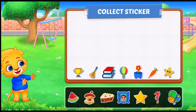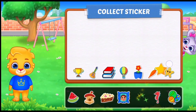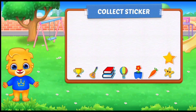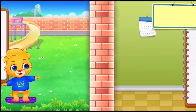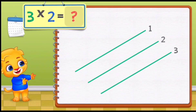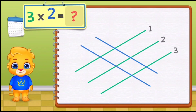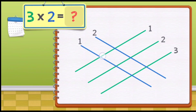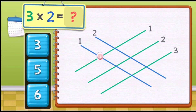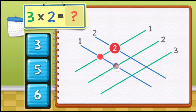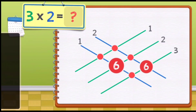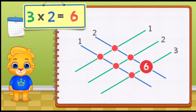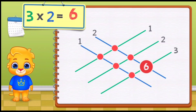Pick a sticker. Three times two equals: one, two, three, four, five, six. Three times two equals six.